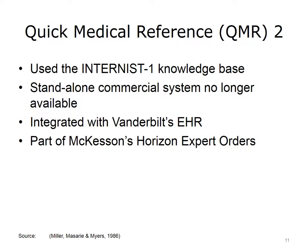The Quick Medical Reference Program, or QMR, was designed as a decision support system. It utilized the Internist I knowledge base but provided a list of potential diagnoses for the physician to consider, rather than trying to identify the single correct diagnosis. Even the name change conveys that it is a reference for physicians rather than an expert internist. In the early 90s, the system was available commercially, initially with a small company founded by some of the developers, and later it was acquired by a larger company. However, eventually the larger company no longer supported it and stopped selling it. When Dr. Miller moved to Vanderbilt University in the mid-90s, he integrated a research version of QMR with Vanderbilt's EHR. When the IT company McKesson acquired rights to some of Vanderbilt's EHR software, some of QMR's features were integrated with McKesson's Horizon Expert Orders feature.